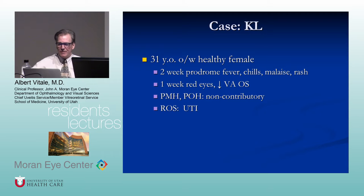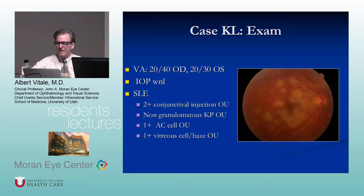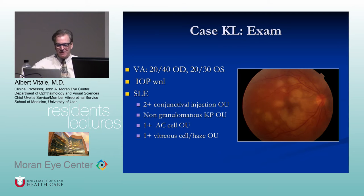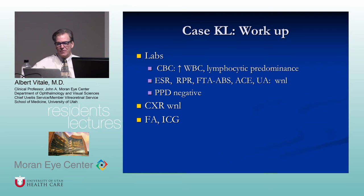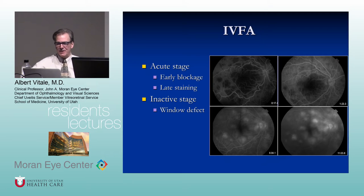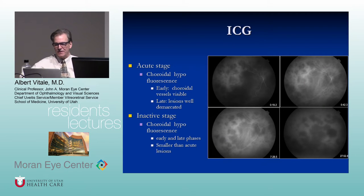A 31-year-old healthy woman with a history of fever, prodrome, malaise, rash, red eye, decreased vision, and history of UTI, with characteristic plaquoid lesions in the back of the eye — this is APMPPE. APMPPE usually has a little vitritis, occurs in young otherwise healthy patients, and is usually a bilateral disease. Chest x-ray and labs are usually within normal limits. There's a characteristic angiographic picture with early blockage and late staining of the lesions. ICG shows hypofluorescence, suggesting disease in the choroid or choriocapillaris.